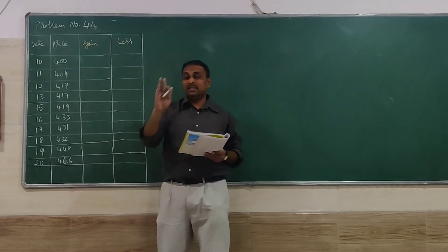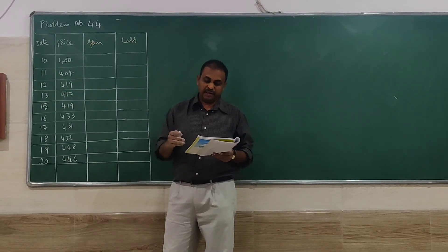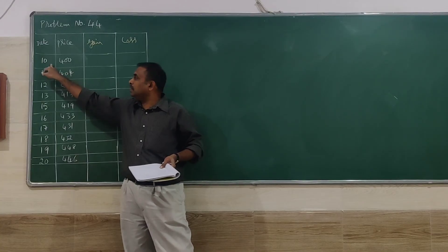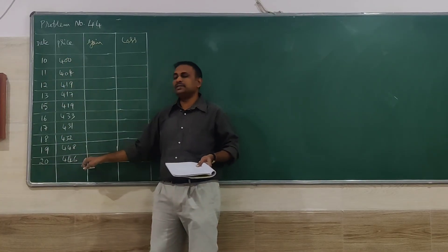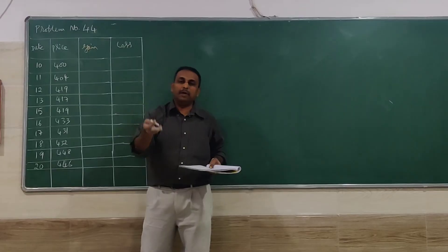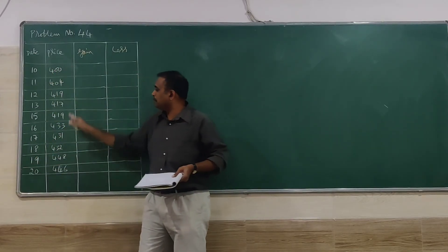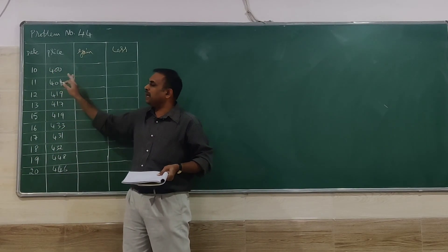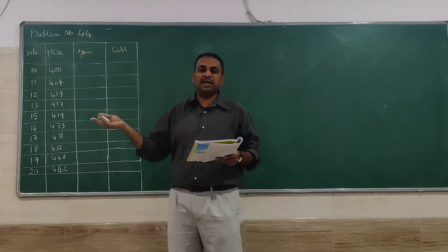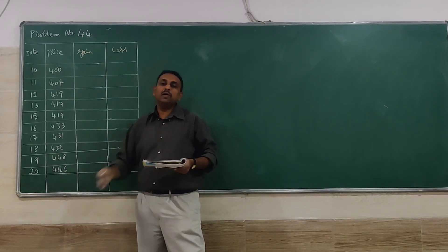C-44 is a different problem. Calculate the Relative Strength Index from the following information of a particular company. The company has given prices on different dates — some dates may be missing due to holidays, Saturdays, or Sundays. Don't worry about the dates; focus on the prices, and with those we have to find whether the particular company's share is good to buy or not, based on average price variation.